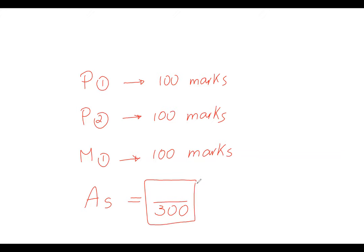يبقى ده الطريقة اللي هتمتحن بيها: هتمتحن 3 Papers وحيتجمعوا out of 300 عشان تاخد الـ Grade بتاعك. الـ Grading System بتاع الـ A-Level is A, B, C and so on. يعني مش 9 to 1 زي ما كنا بنعمل في الـ O-Level.